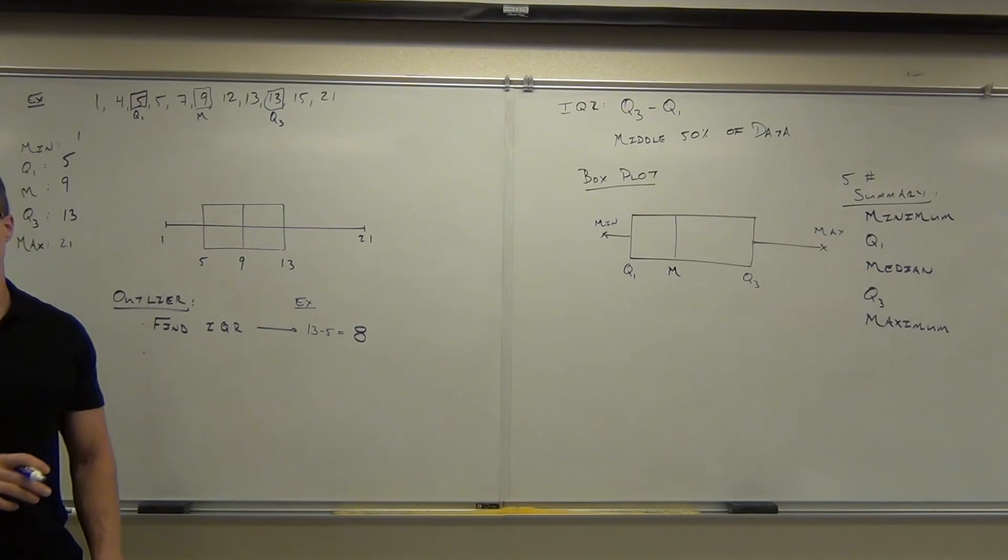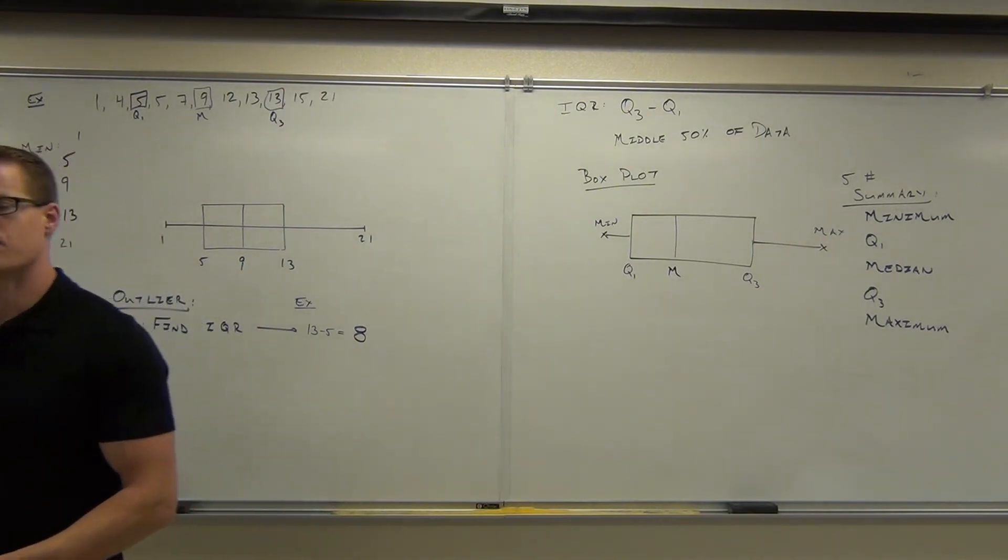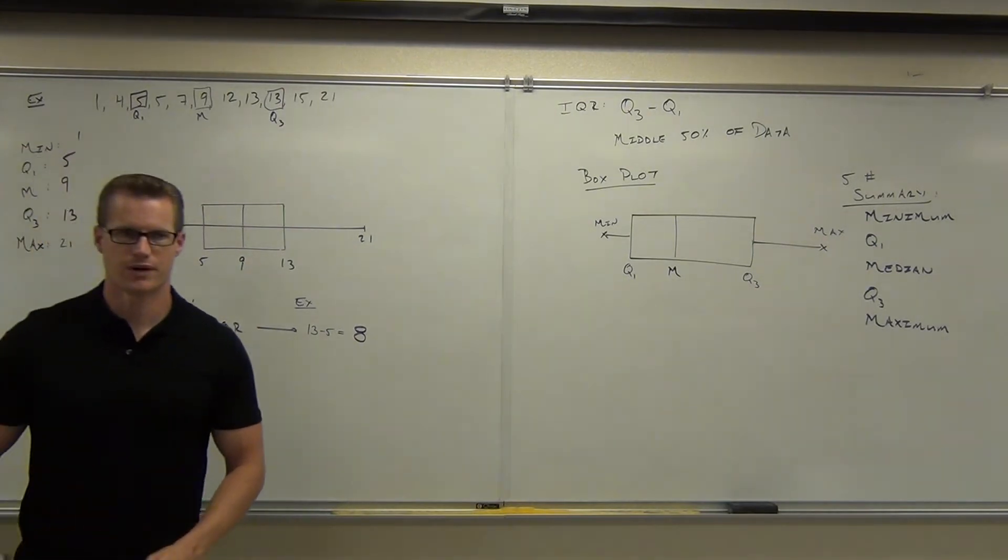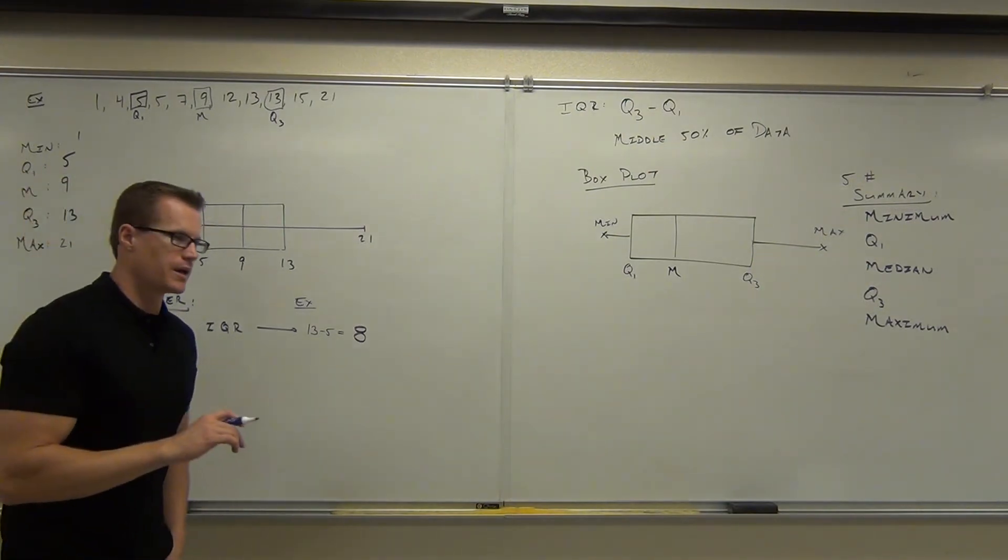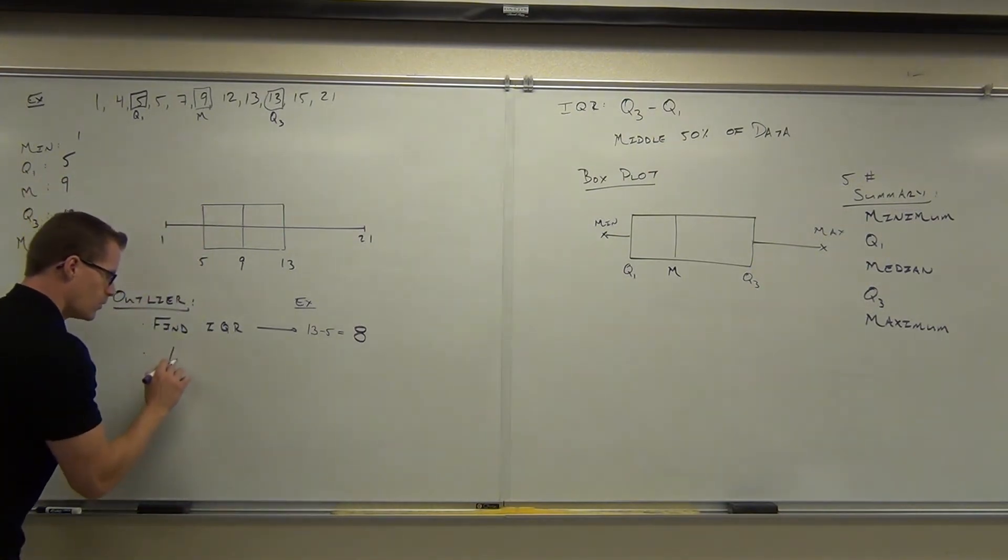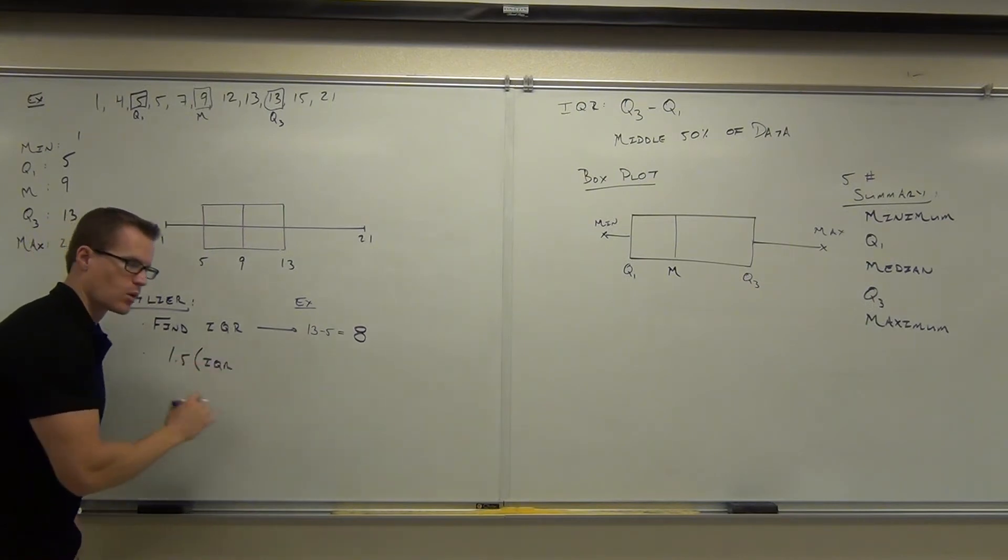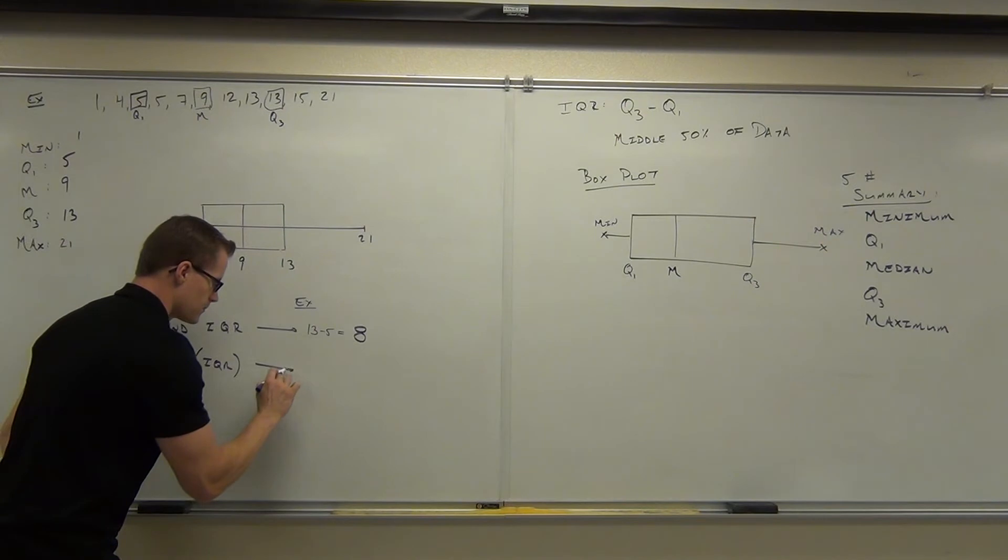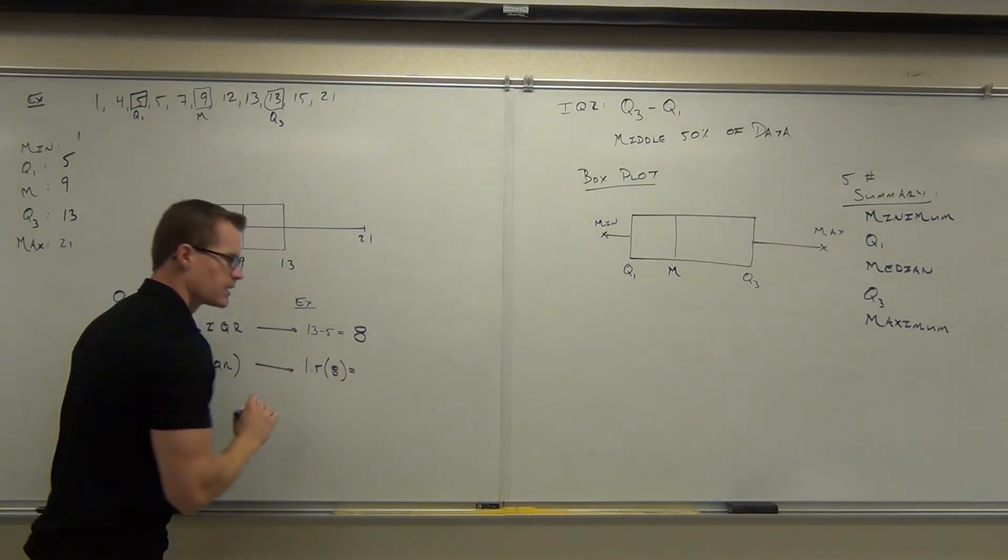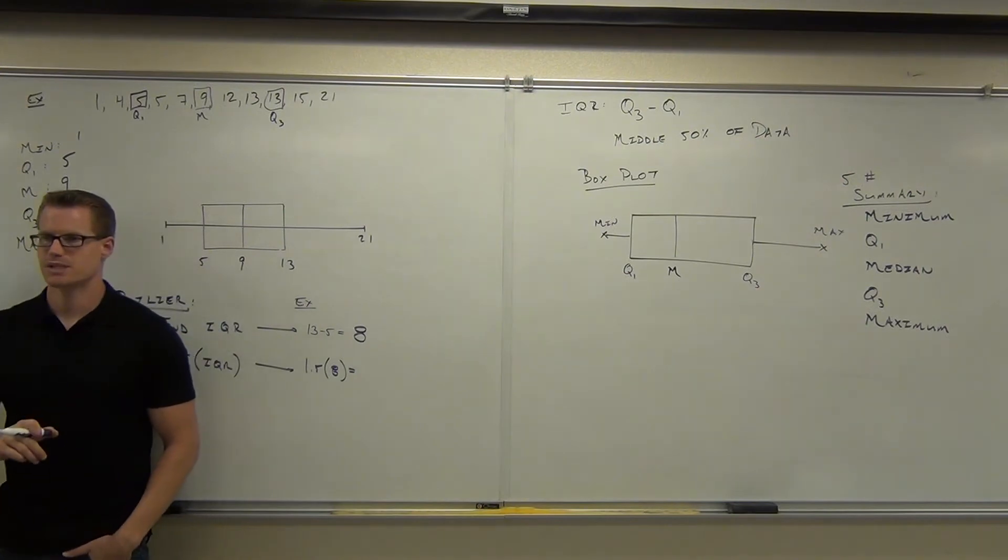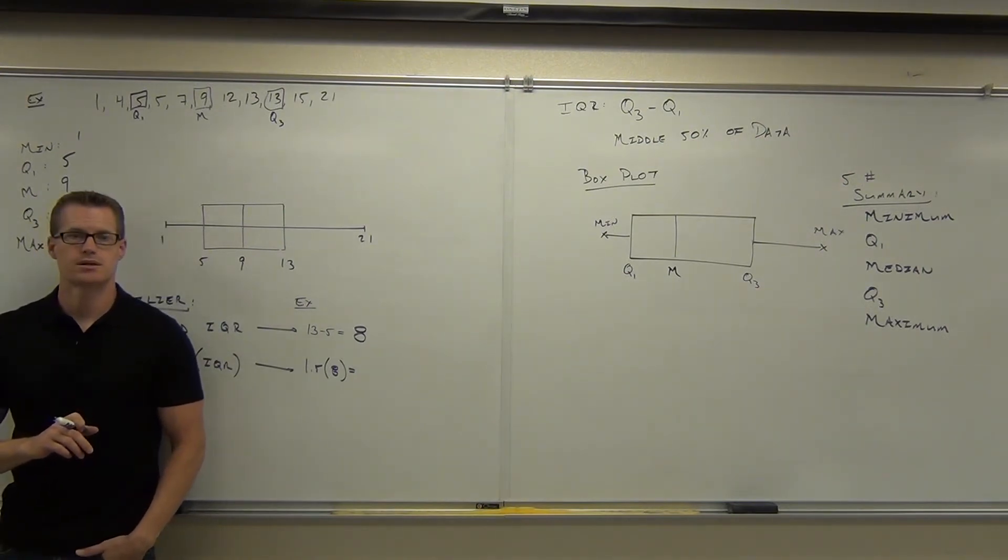The next thing you do, this is where the math comes in, you have to watch carefully, okay? Very carefully. You have to multiply 1.5 times IQR. Can you tell me how much is 1.5 times 8? 12. Okay.